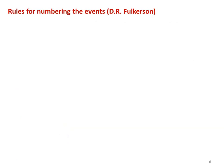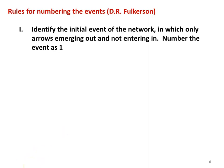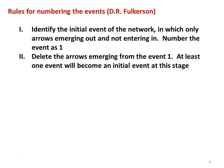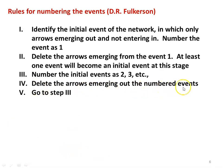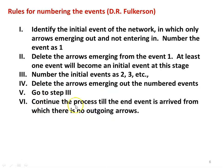Rules for numbering the events are given by D.R. Fulkerson. First, identify the initial event in the network in which only arrows emerge, not enter. Number it as 1 and delete the arrows emerging from event 1. At least one new event will then become the initial event. Number subsequent events as 2, 3, etc., then delete the arrows emerging from the numbered event. Continue this process until the final event is reached, from which there is no outgoing arrow.